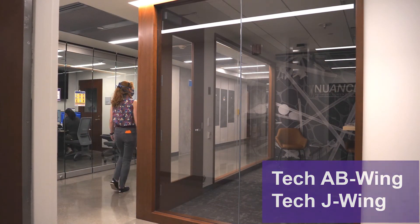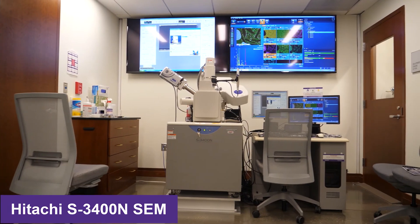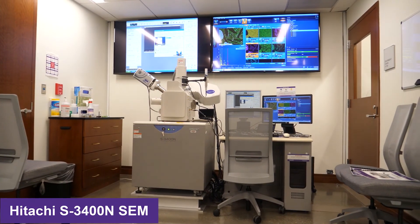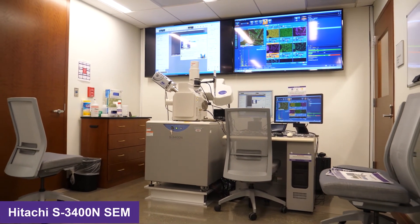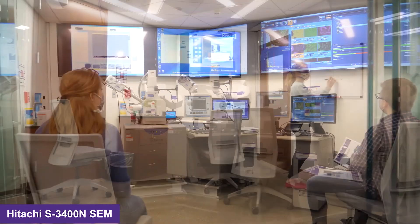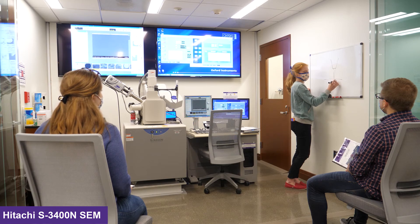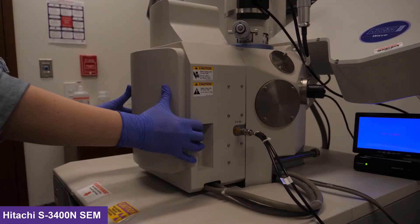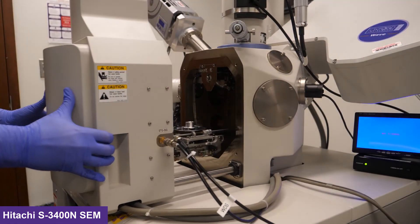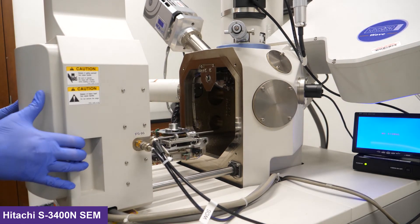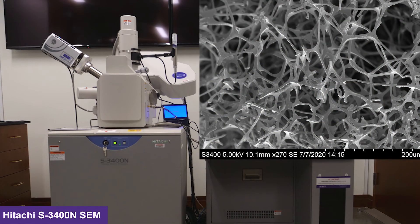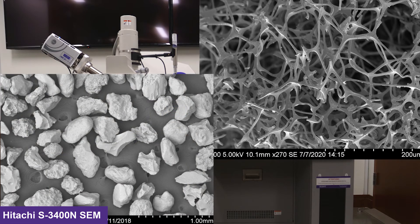When you enter the AB wing on the first floor, the first instrument that you'll see is the Hitachi S3400N. This SEM is our main teaching microscope and makes an appearance in many MSE courses. It has a large specimen chamber to fit large samples and wafers. It is great for imaging larger samples and features down to about 0.5 microns.